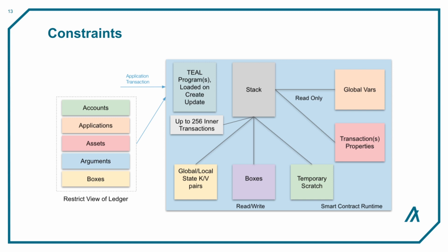In summary, both the AVM and EVM are environments written specifically for smart contract execution. The primary differences between the two are the languages used to develop, execution constraints, and how data is stored. Algorand's AVM makes many of the Algorand-specific qualities — such as quick block time, instant finality, and high TPS — possible while still supporting complex smart contracts on Layer 1.